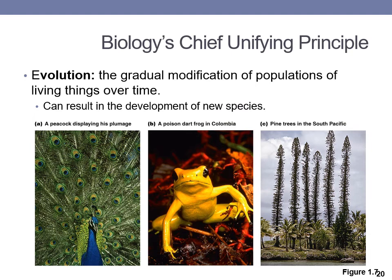Biology's chief unifying principle is evolution. Evolution can be defined as the gradual change or modification of populations of living things over a period of time. These changes are usually a result of selection pressure — pressure to change in order to adapt to changing environments. These changes can result in the development of new species, which can better adapt to new environments.